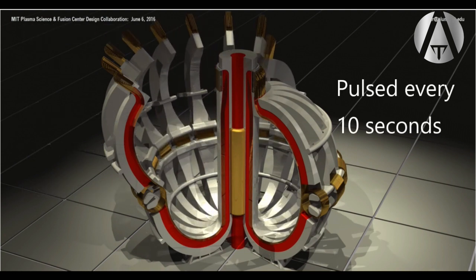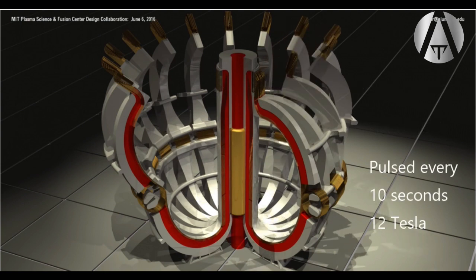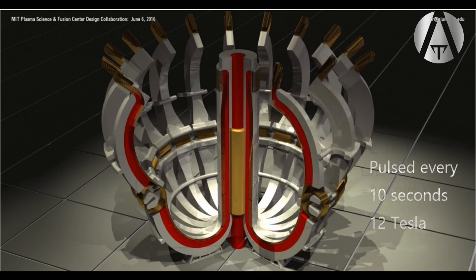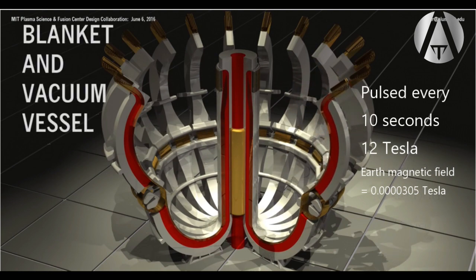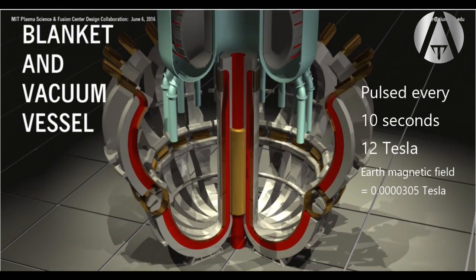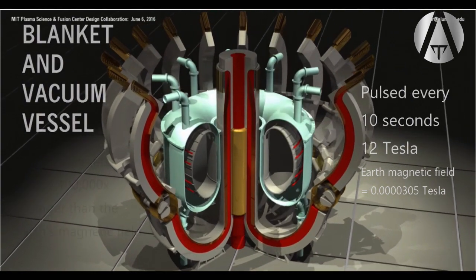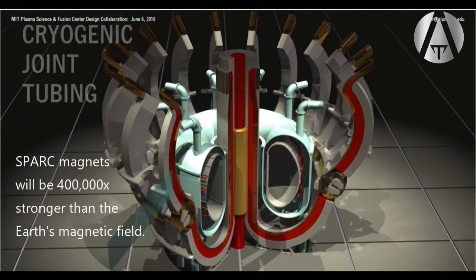Its magnets will produce 12 tesla field. The earth's magnetic field at the equator is about 0.0000305 tesla. So the magnets at SPARC will create a field of magnetic force almost 400,000 times stronger than the earth.